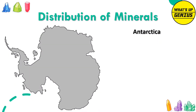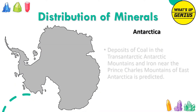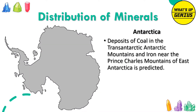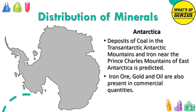Antarctica: Deposits of coal in the Trans-Antarctic mountains and iron near the Prince Charles mountains of East Antarctica have been predicted. Iron ore, gold and oil are also present in commercial quantities.